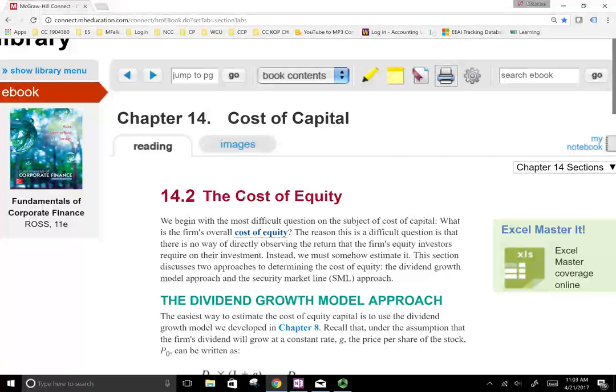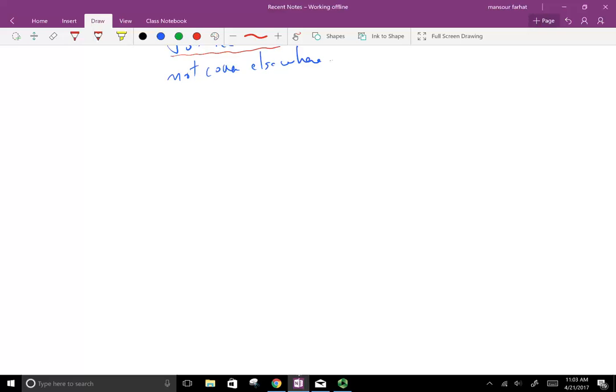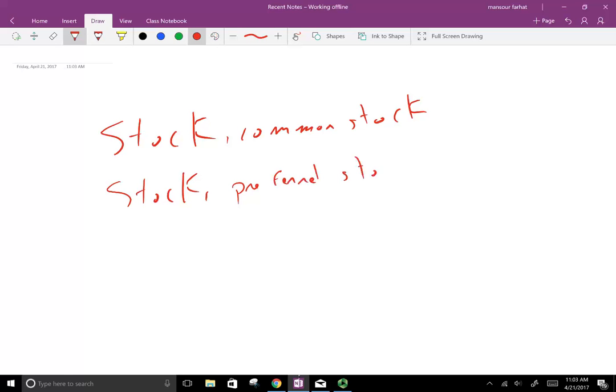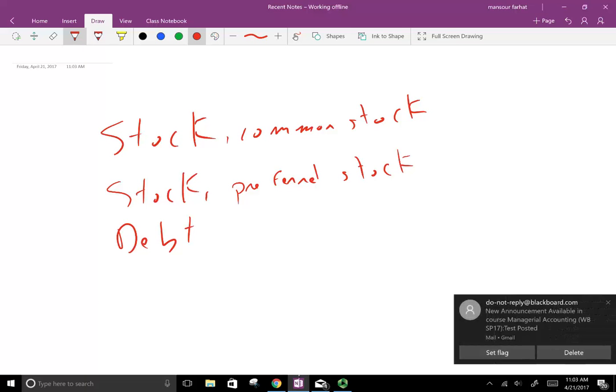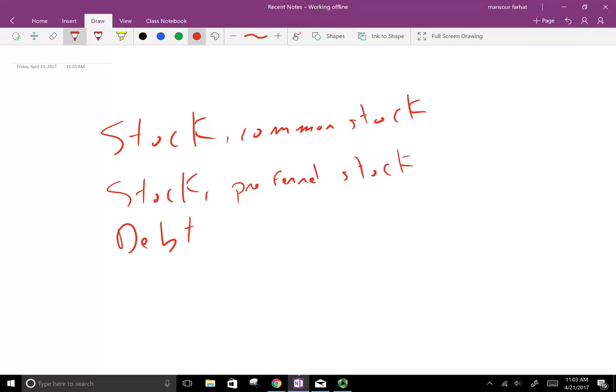We're going to look at the cost of equity first, then we're going to look at the cost of preferred stock. So how can you finance a company? You can use stocks, to be more specific, common stock. You could use preferred stock, or you could use debt - all sorts of debt, short-term debt, long-term debt. And obviously, the other form of financing is internal financing, when the company internally finances itself.